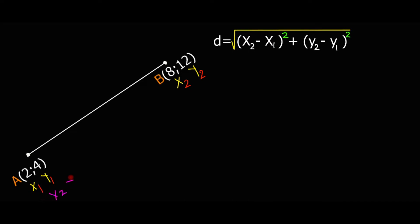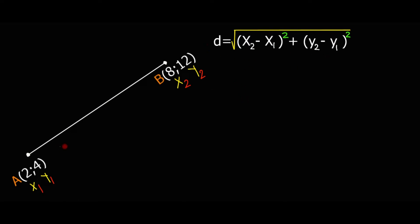It's all up to you which point you choose as point 1. We choose this one as x1 and y1, and then the other as x2 and y2. Now I should share this formula — find the distance AB, because we have distance AB.